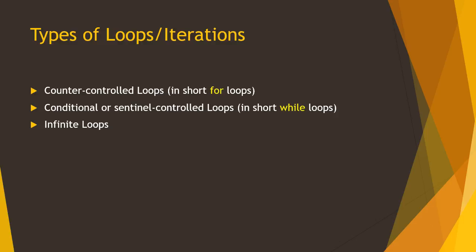The first loop is called counter-controlled loops, or in short, we call it for loops. Counter-controlled loop, or for loop, repeats a statement or set of statements for a specific number of times. We already know in advance how many times the for loop will be executed.